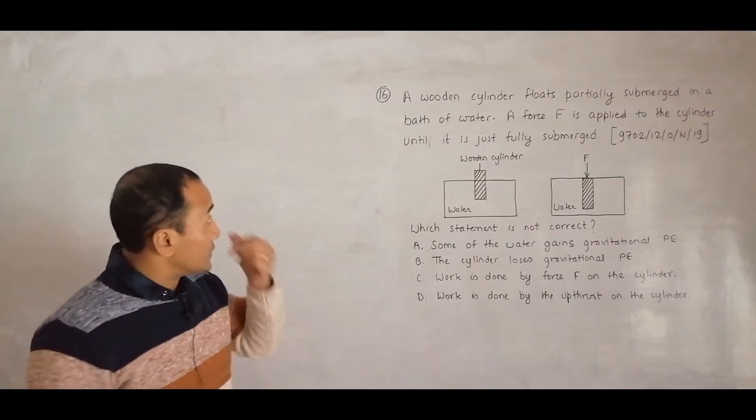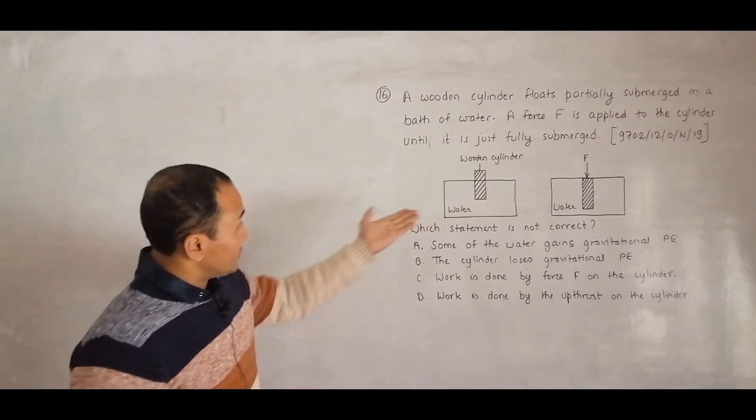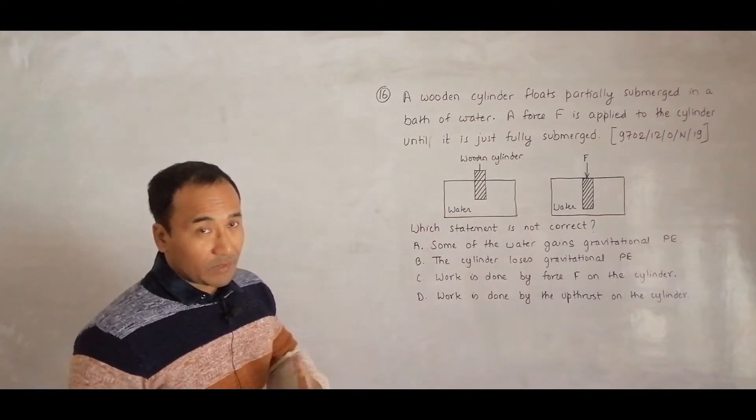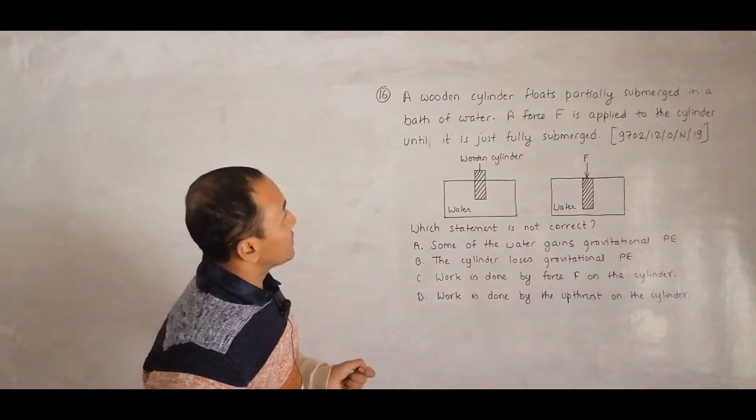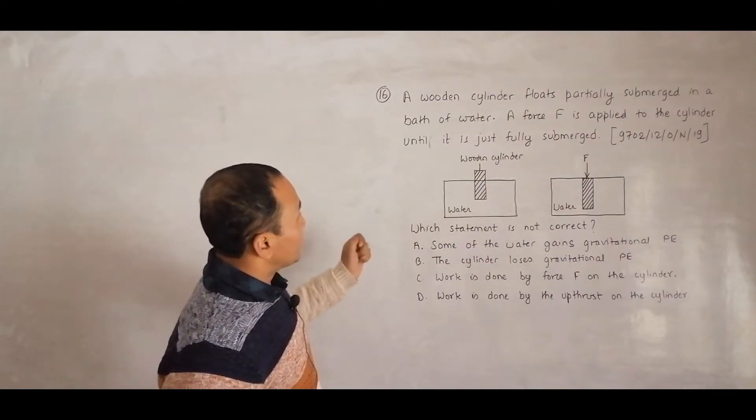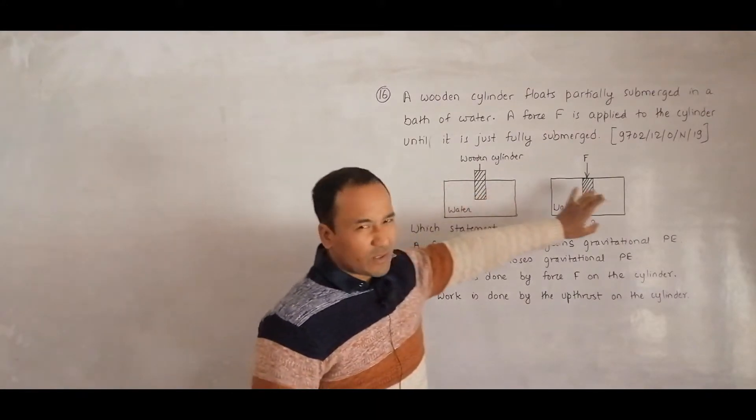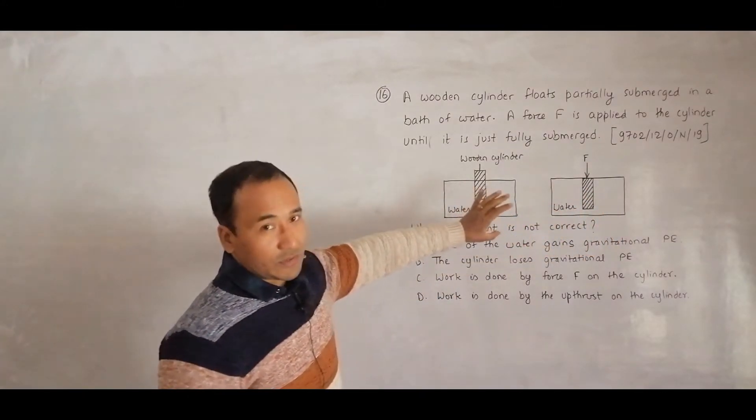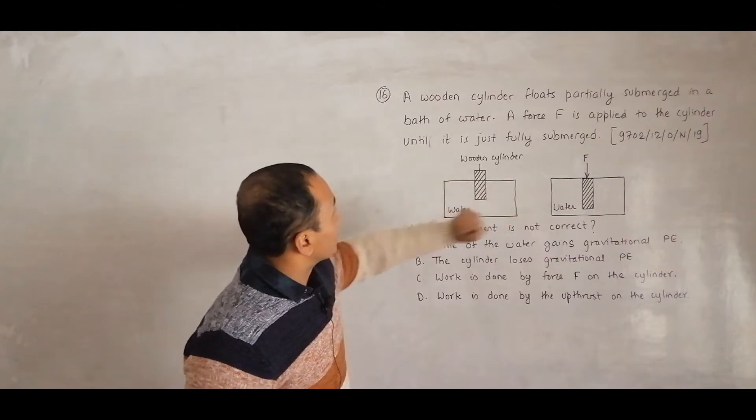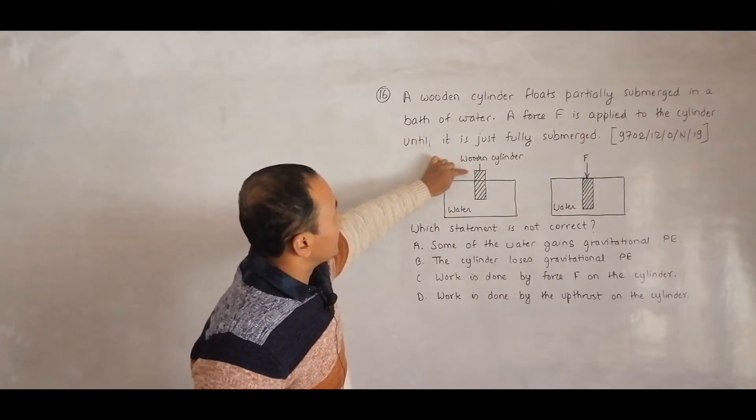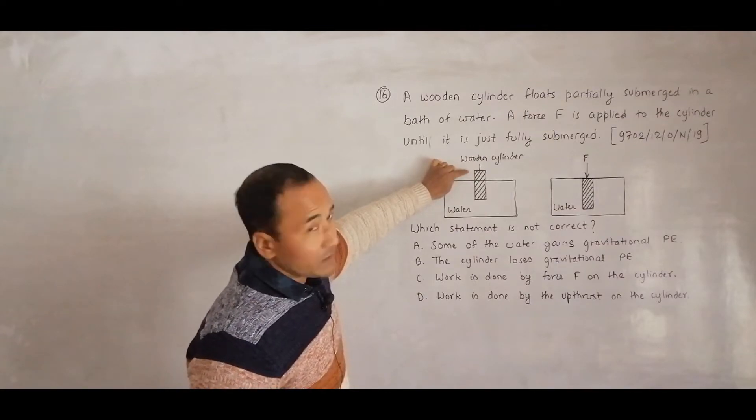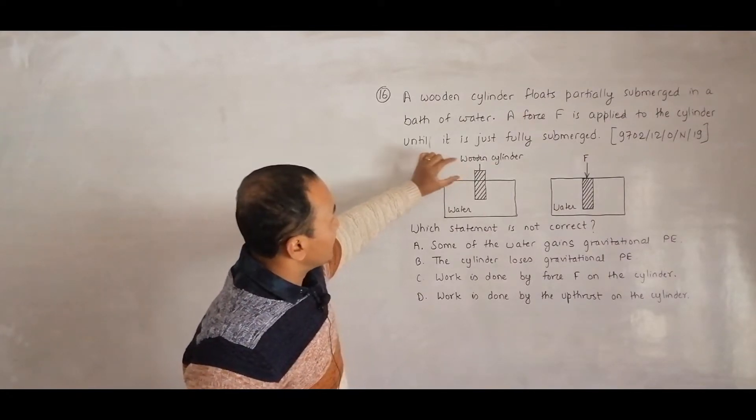As you can see from the diagram, it says that a wooden cylinder floats partially submerged in a bath of water. So this is water - I didn't use any colors because it took a long time. The wooden cylinder floats partially, meaning it is in equilibrium.